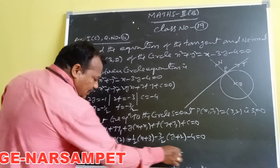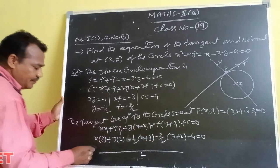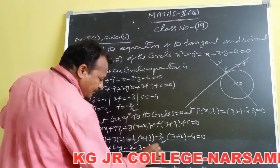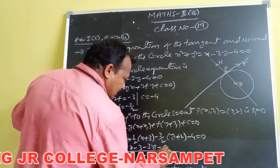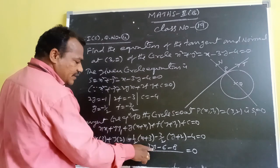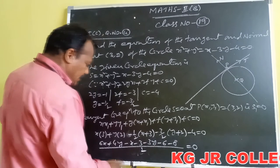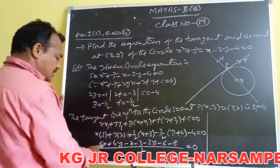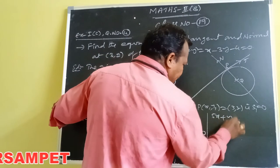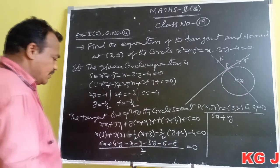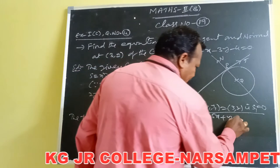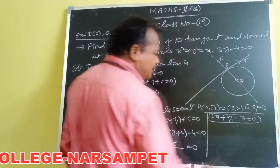Taking LCM 2 and cross multiplying: 6x plus 4y minus x minus 3 minus 3y minus 6 minus 8 equals 0. Collecting terms: 6x minus x gives 5x, 4y minus 3y gives y, and constants: minus 3 minus 6 minus 8 equals minus 17. So the tangent equation is 5x plus y minus 17 equals 0, which is the tangent equation at the point 3 comma 2.